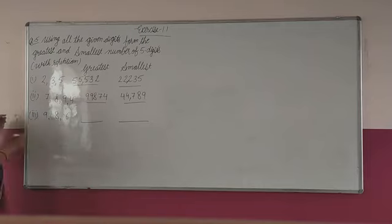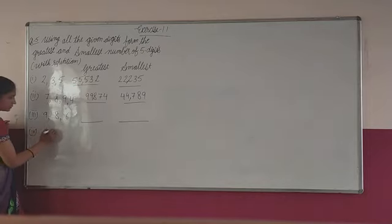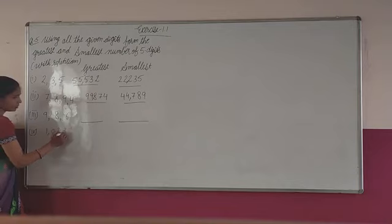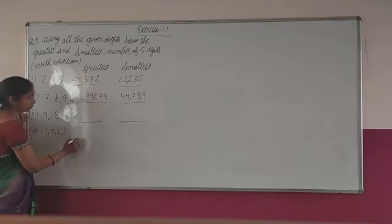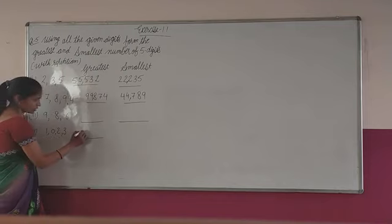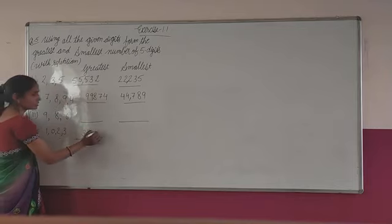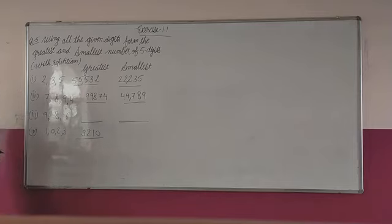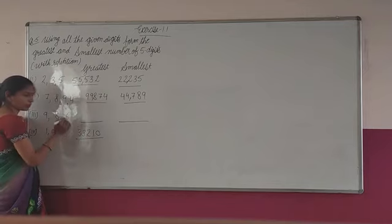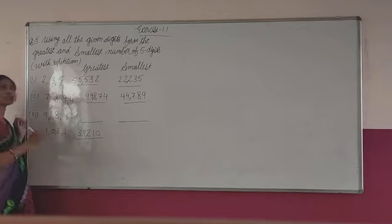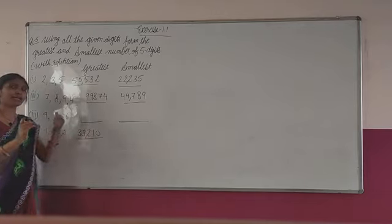Part 4 has digits 1, 0, 2, and 3. To form the greatest number, arrange in descending order: 3, 2, 1, 0. But we need 5 digits and only have 4, so we repeat the greatest digit 3. Writing 3 again gives us 33,210. So the greatest number is 33,210.